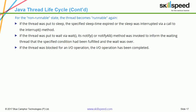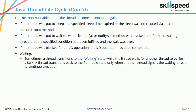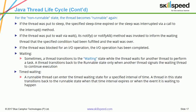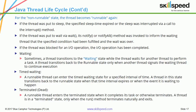Other states: Waiting state — a thread transitions to Waiting while it waits for another thread to perform a task, and transitions back to Runnable only when another thread signals it to continue. Timed Waiting state — a runnable thread can enter Timed Waiting for a specified interval of time, and transitions back to Runnable when that interval expires or the awaited event completes. Terminated or Dead state — a runnable thread enters Terminated when it completes its task or otherwise terminates; a thread is in Terminated state only when the run() method terminates naturally and exits.